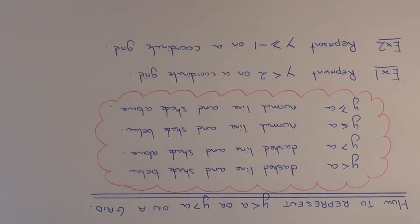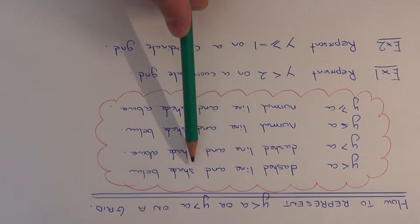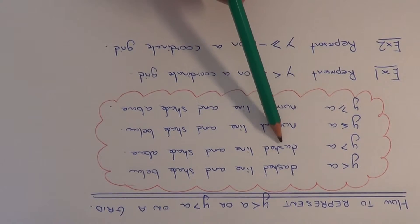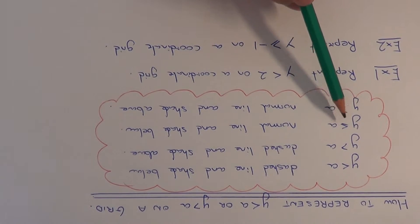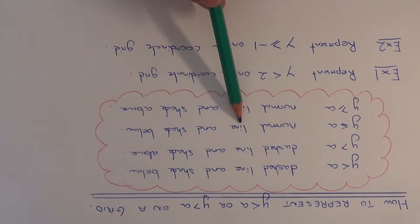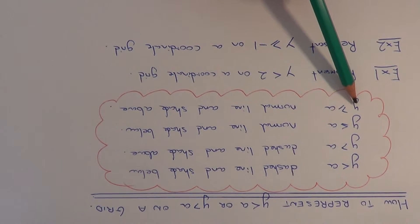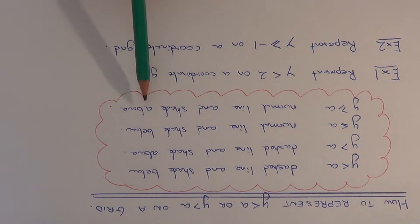First of all, you need to know what type of lines to draw and whether you shade above or below the line. For y is less than a, you do a dashed line and shade below. For y is more than a, you do a dashed line and shade above. For y is less than or equal to a, you do a normal line and shade below. And finally, for y is more than or equal to a, you do a normal line and shade above.